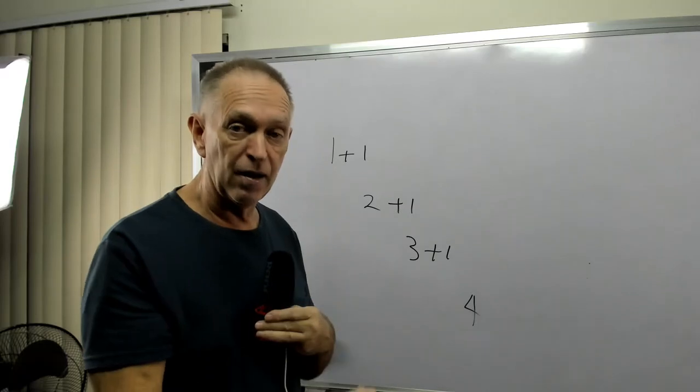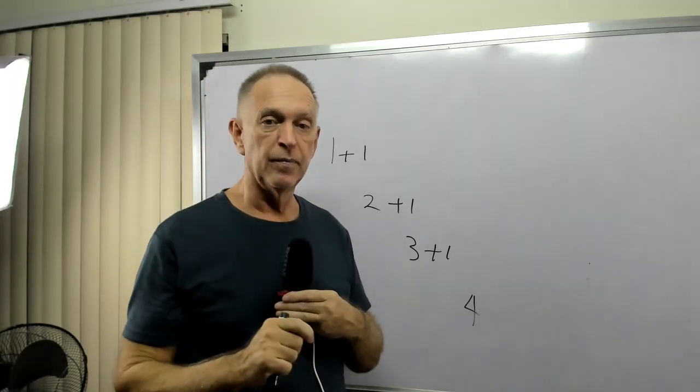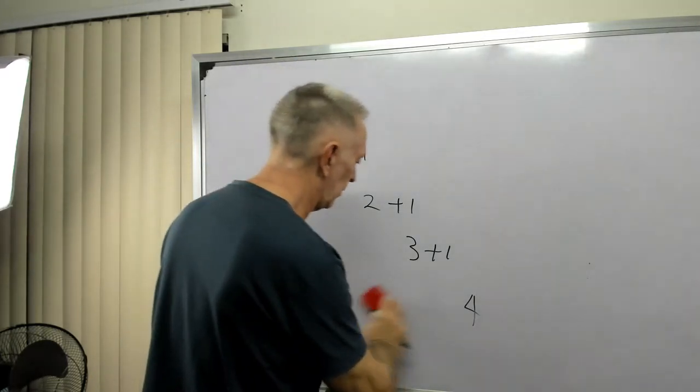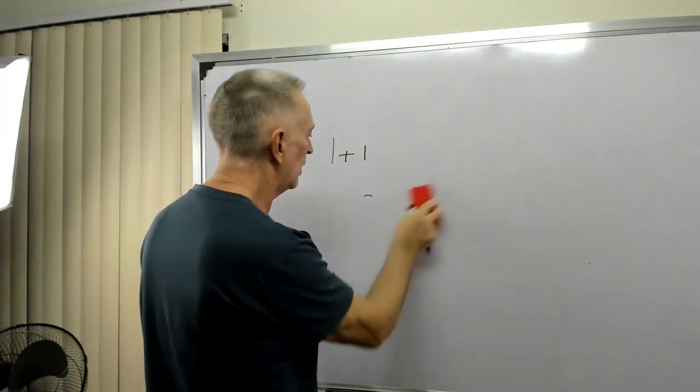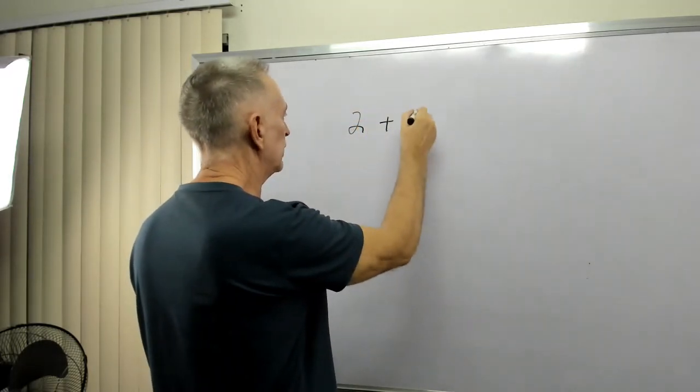So when you count, you're already adding one. Now, the confusion comes in, let's say we have, where somebody says, okay, add two plus three.